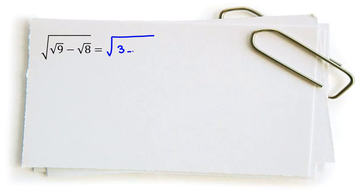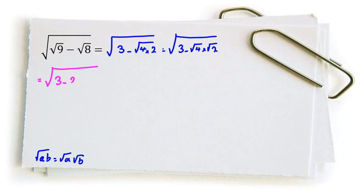And 8 is 4 times 2. We know that if a and b are positive, square root of ab equals square root of a times square root of b. So it will be square root of 3 minus square root of 4 times square root of 2. It will be square root of 3 minus 2 root 2.